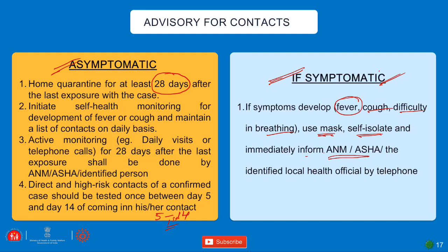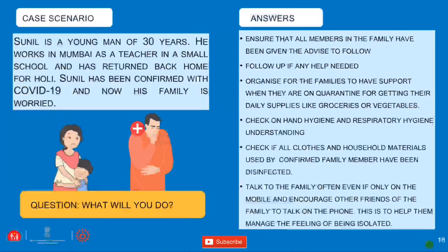Case study: Sunil is a 30-year-old teacher in Mumbai who returned home for Holi and has been confirmed with COVID-19. His family is now worried. What should you do? Ensure all family members are given advice to follow — if they were in contact with Sunil for a long duration, every person in the family will be quarantined and given proper advice, with follow-ups by healthcare workers.